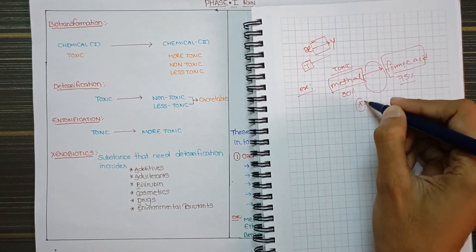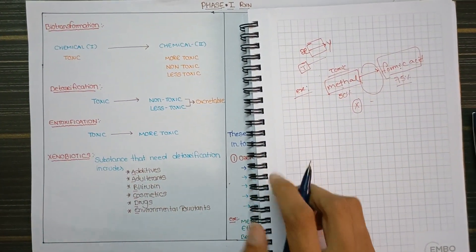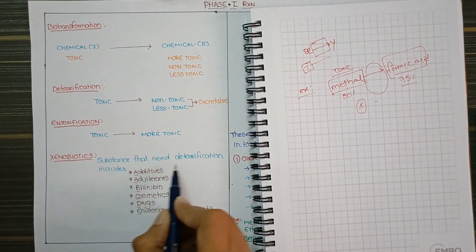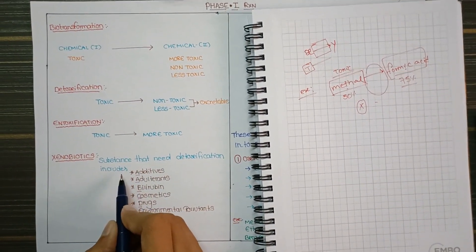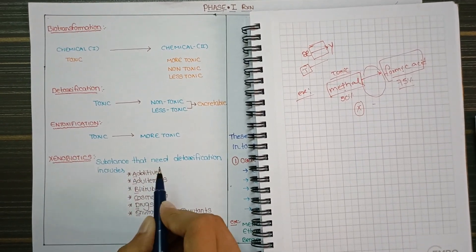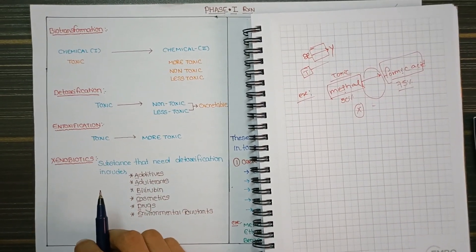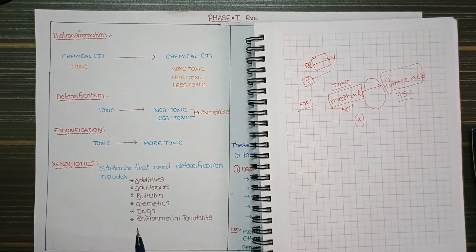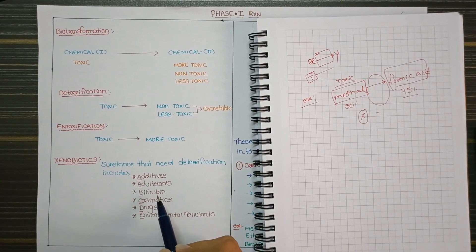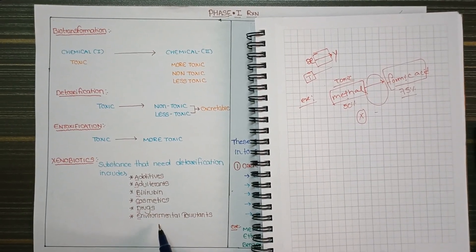Xenobiotics are foreign particles. Xenobiotics are substances that need detoxification. Xenobiotics are foreign particles that need detoxification, which includes additives, adulterants, bile rubins, cosmetics, drugs, and environmental pollutants.